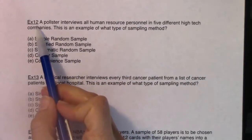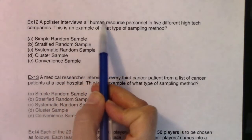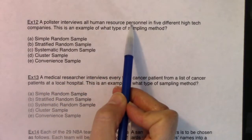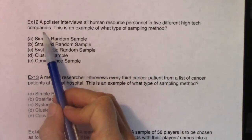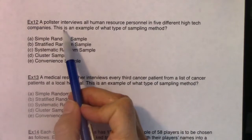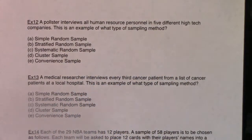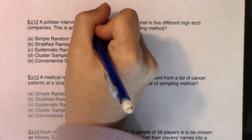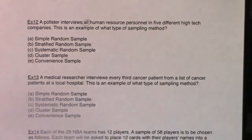Here we go. Example 12: a pollster interviews all human resource personnel in five different high-tech companies. This is an example of what type of sampling method. A buzzword standing out to me is the word 'all.' I want to keep that in mind.